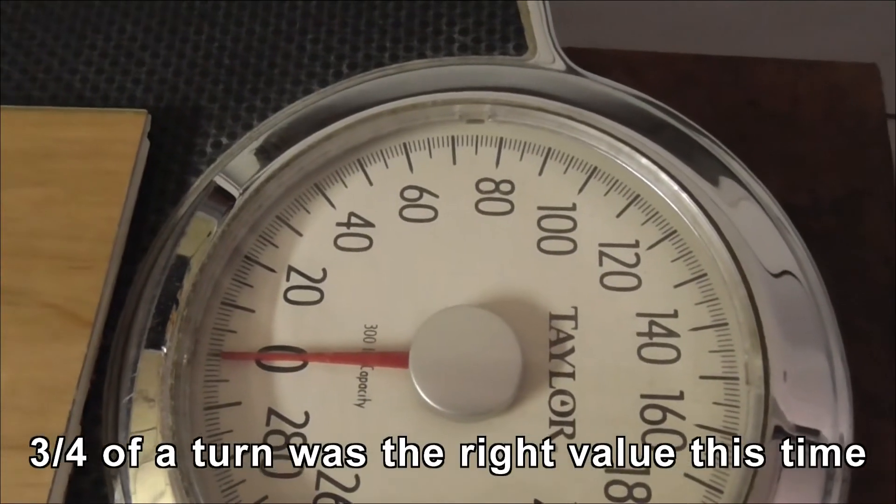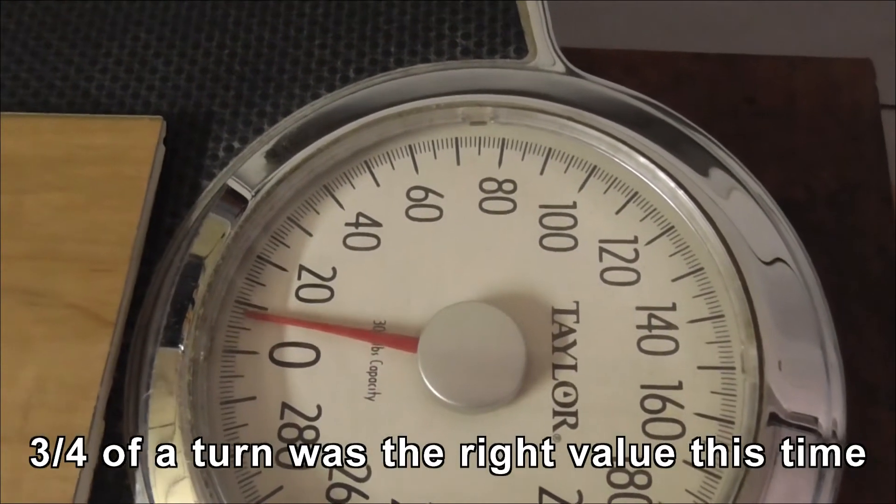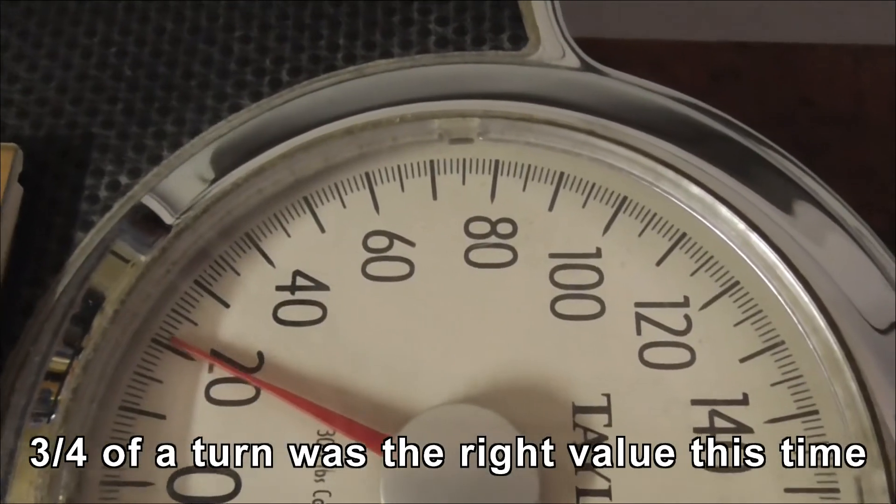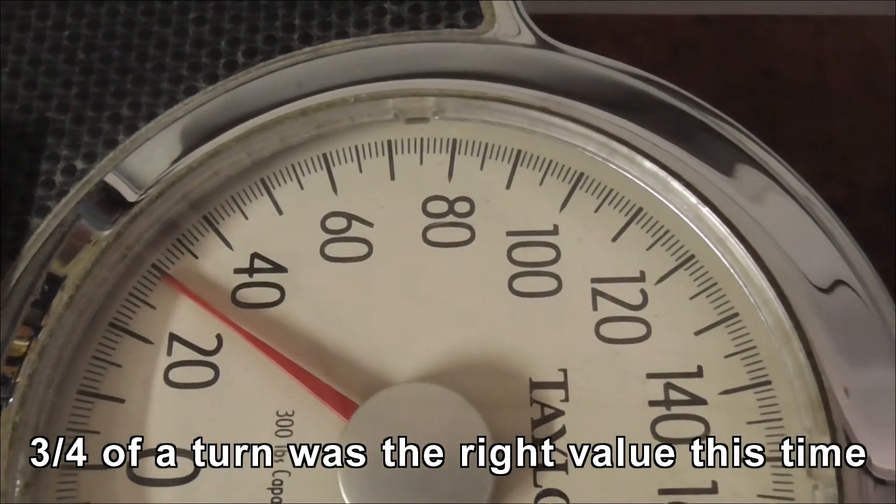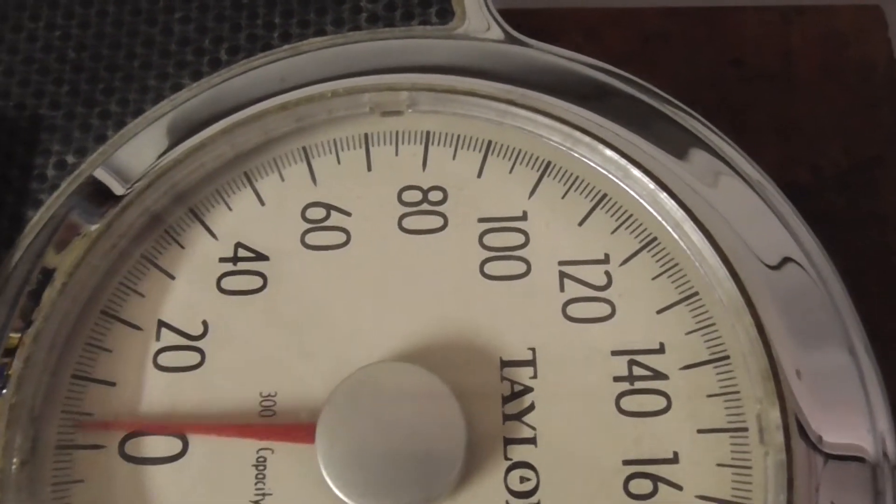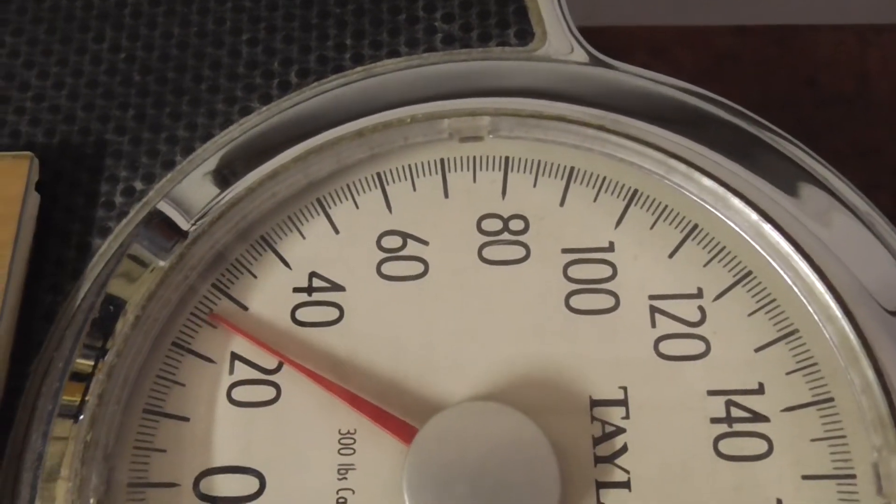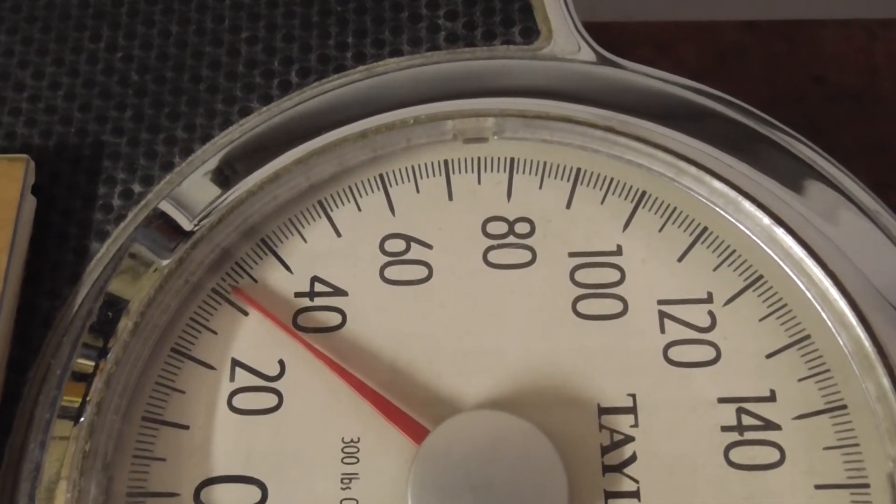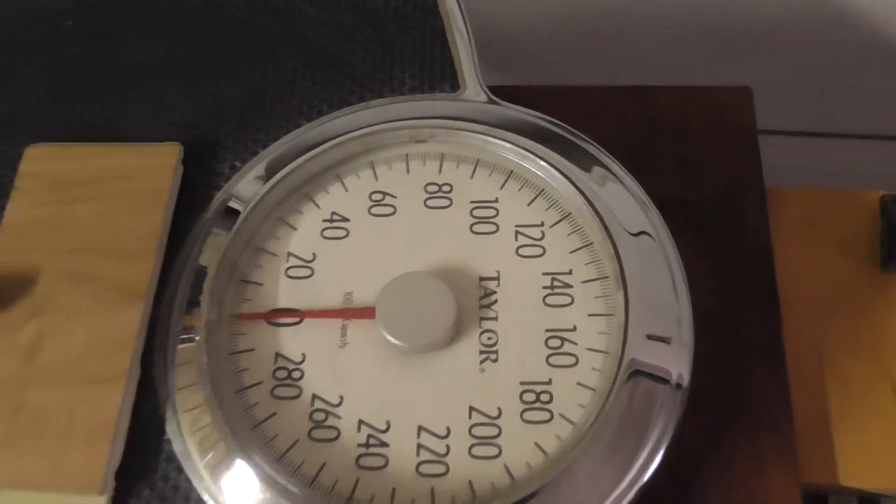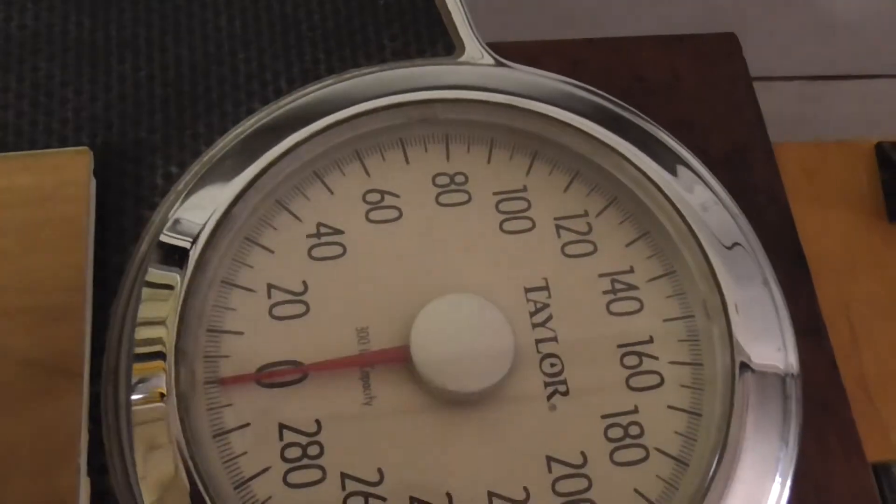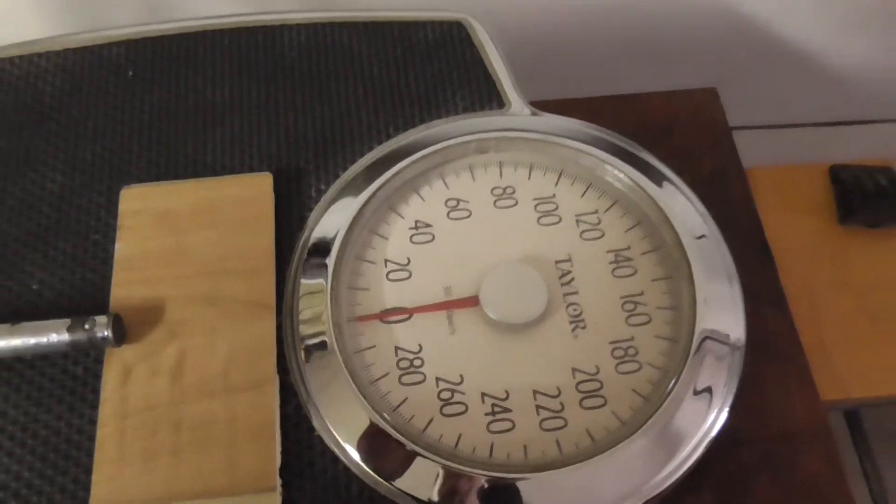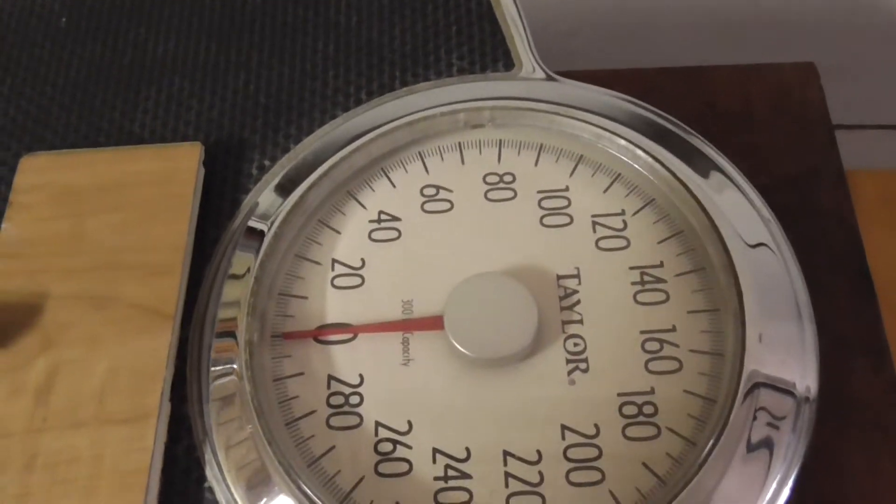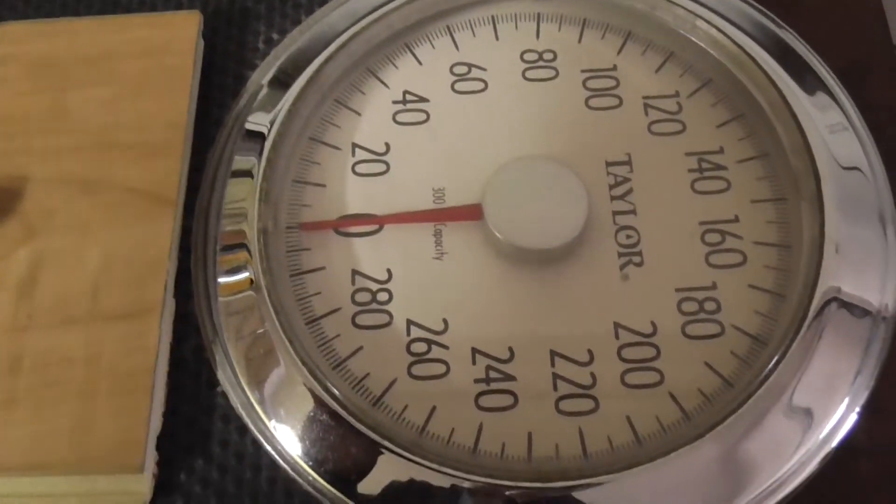So I gave it three, three quarters of a turn. So let's see where it's going now. Well, that's really close to 32, isn't it? I don't think I'm going to get more accurate than that. Okay, so now it should be accurate. I'm going to do a few checks at different loads. And I should be good. I'm going to lock this off.